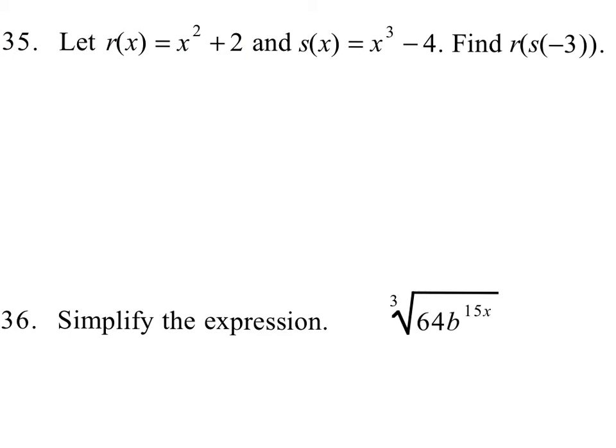Here we've got some composition of functions. We're given r of x and s of x. We've got to find r of s of negative 3. What this means is we've got to plug negative 3 into s. Whatever we get as an answer, then we're going to plug into r.